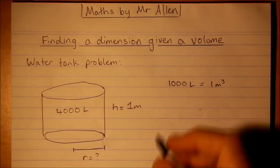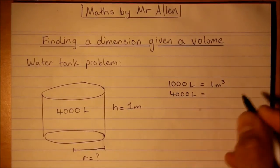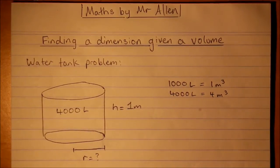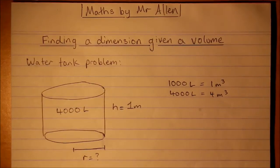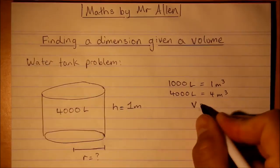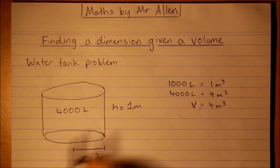Okay, well if that's true then 4,000 litres is going to equal 4 metres cubed. Right, that means our volume that we need is 4 metres cubed for this cylinder.